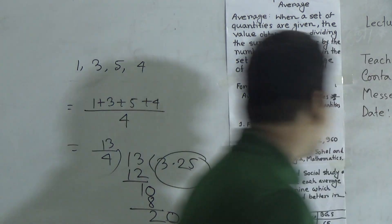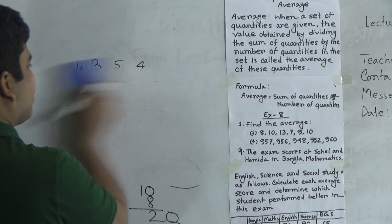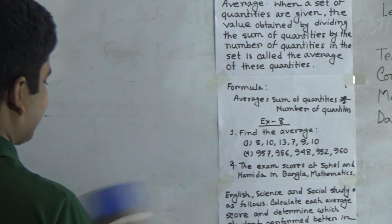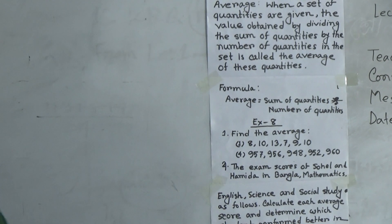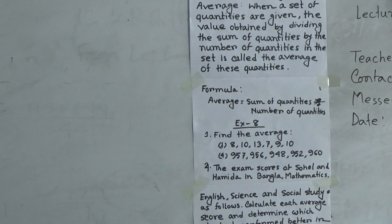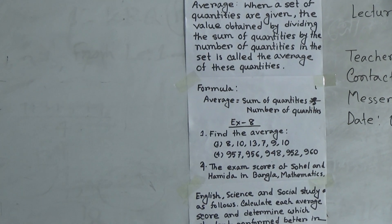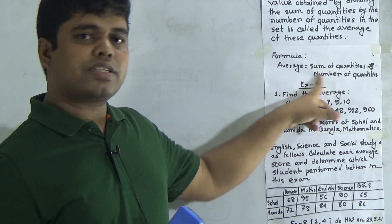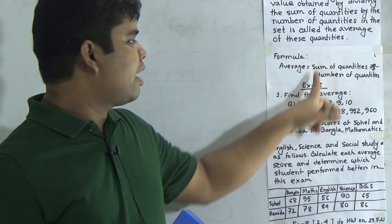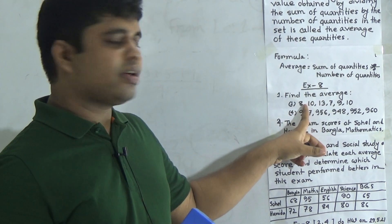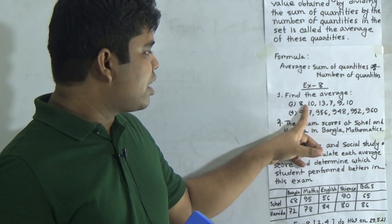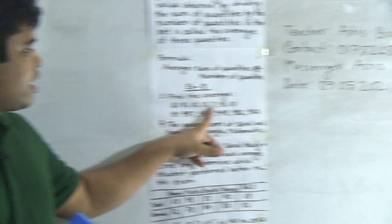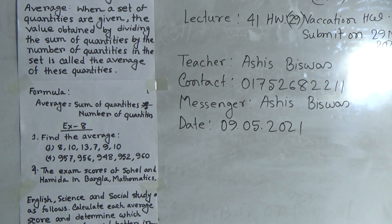Next, we shall solve question number 1. Find the average. That means we use this formula to find out the average. The given numbers are 8, 10, 13, 7, 9 and 10.